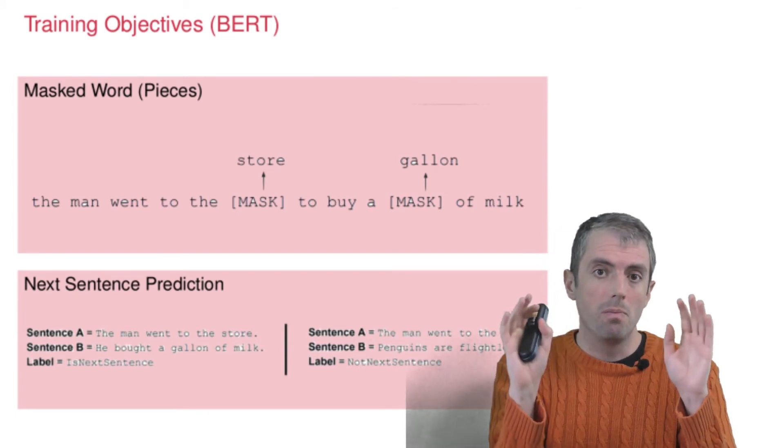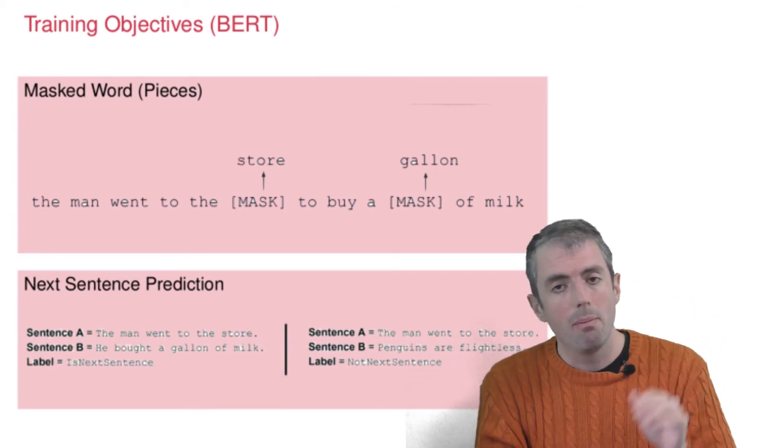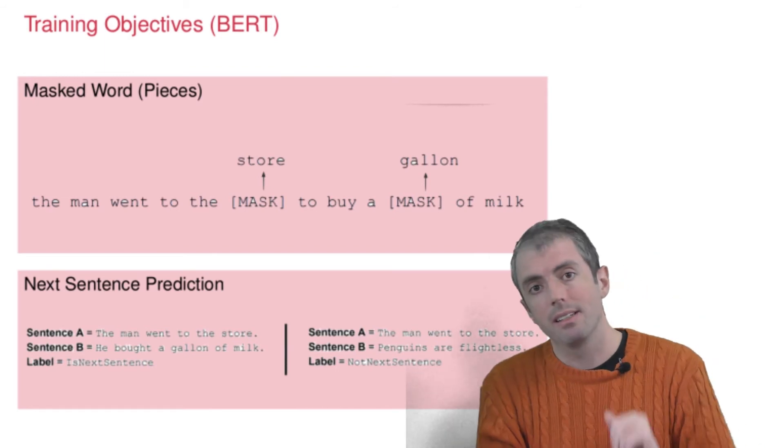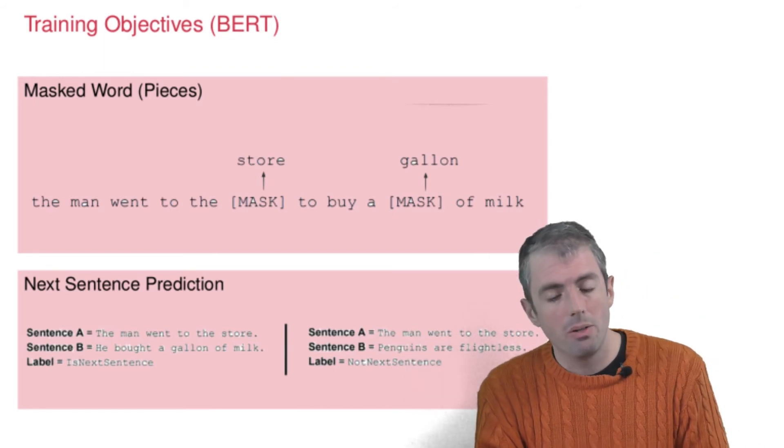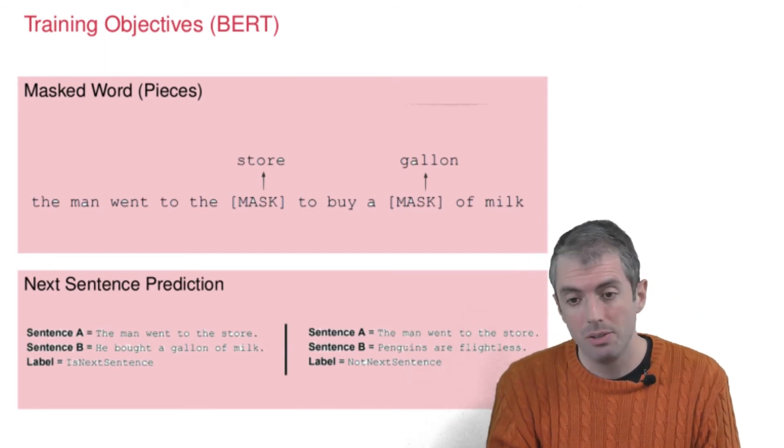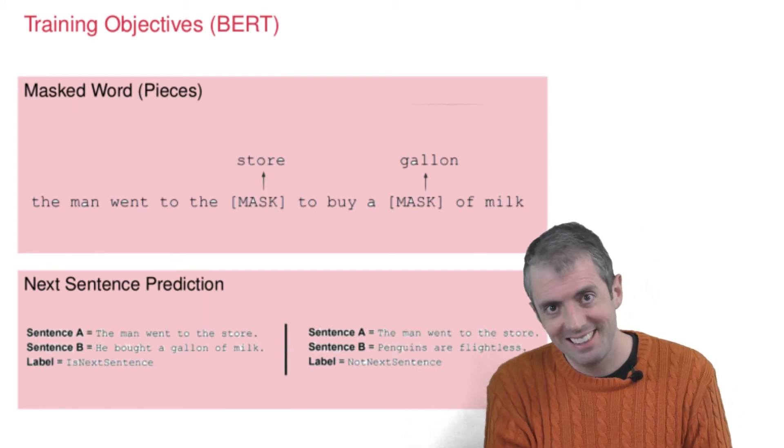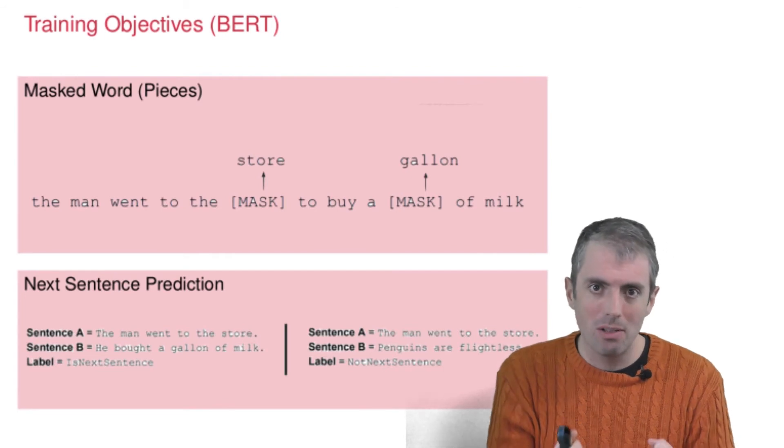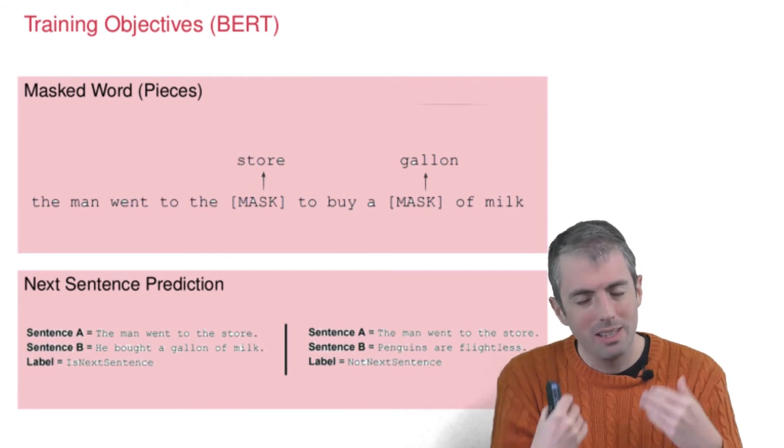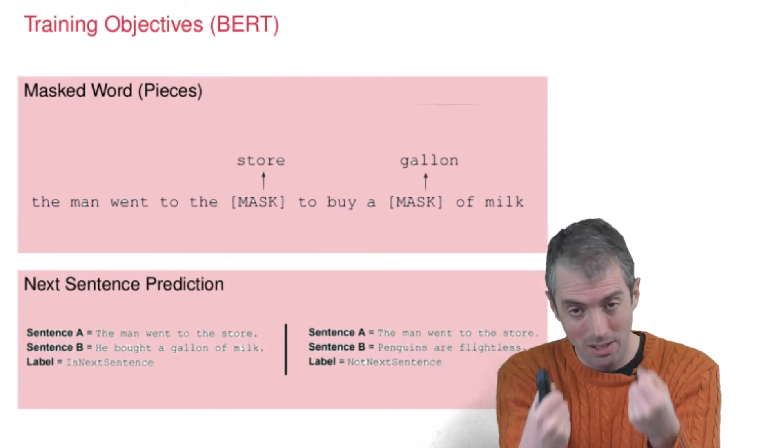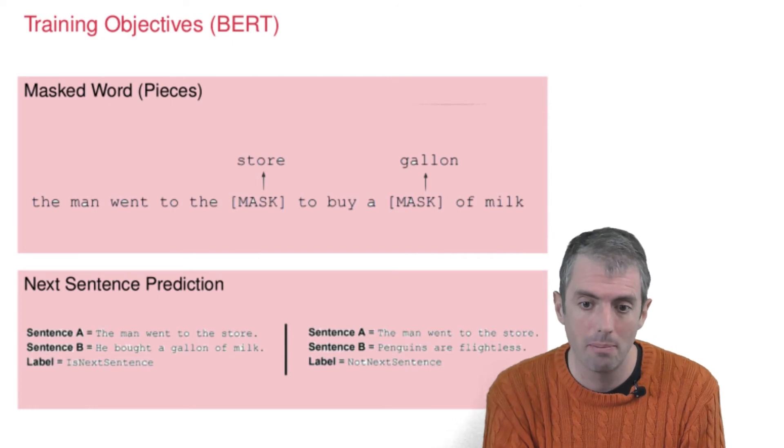So you pretend that you don't know about 15% of the sentence, and then you try to predict the missing words. So this forces the model to be robust to missing context. We've talked about dropout before. You can think about this as encouraging the same sort of robustness in representation.